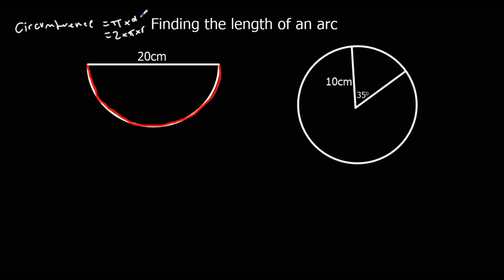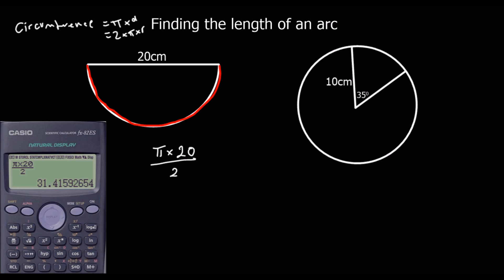So pi times diameter: the diameter is 20 in this case, so pi times 20. And because we've got half a circle, we just need to halve the answer: pi times 20 divided by 2, which gives an arc length of 31.4 cm to one decimal place.